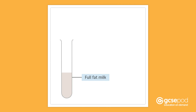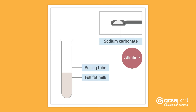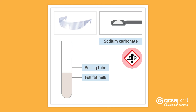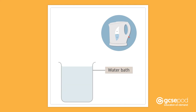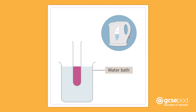You will use full fat milk in a boiling tube and make it alkaline by adding sodium carbonate to it. Sodium carbonate is an irritant so eye protection needs to be worn. Add a few drops of Cresol red so the mixture turns purple. Meanwhile, make a water bath using hot water from a kettle, measure the temperature, and place the boiling tube into the hot water, using a thermometer to monitor its temperature.